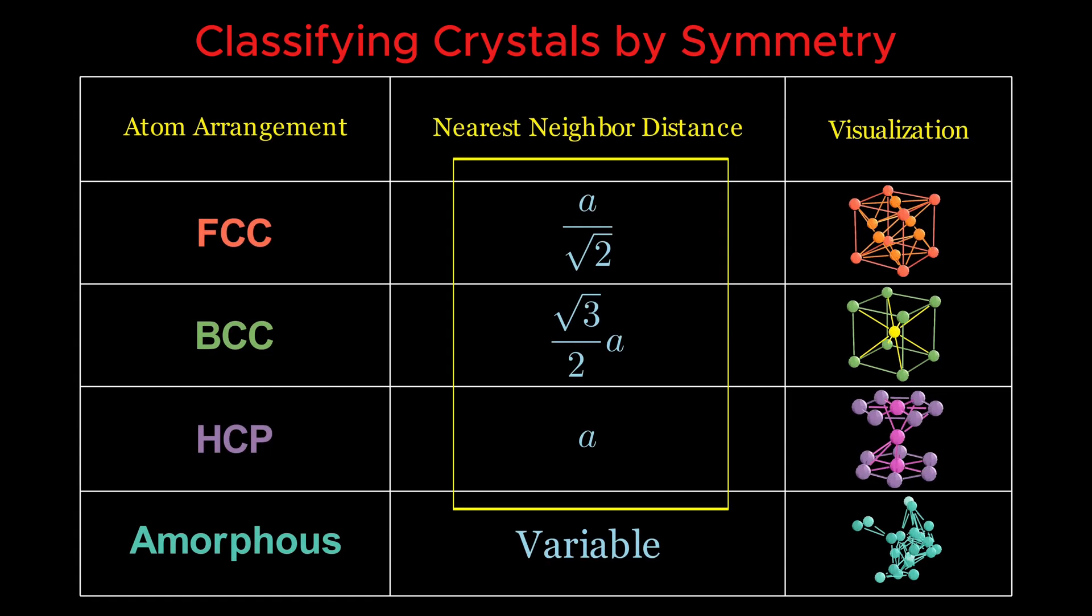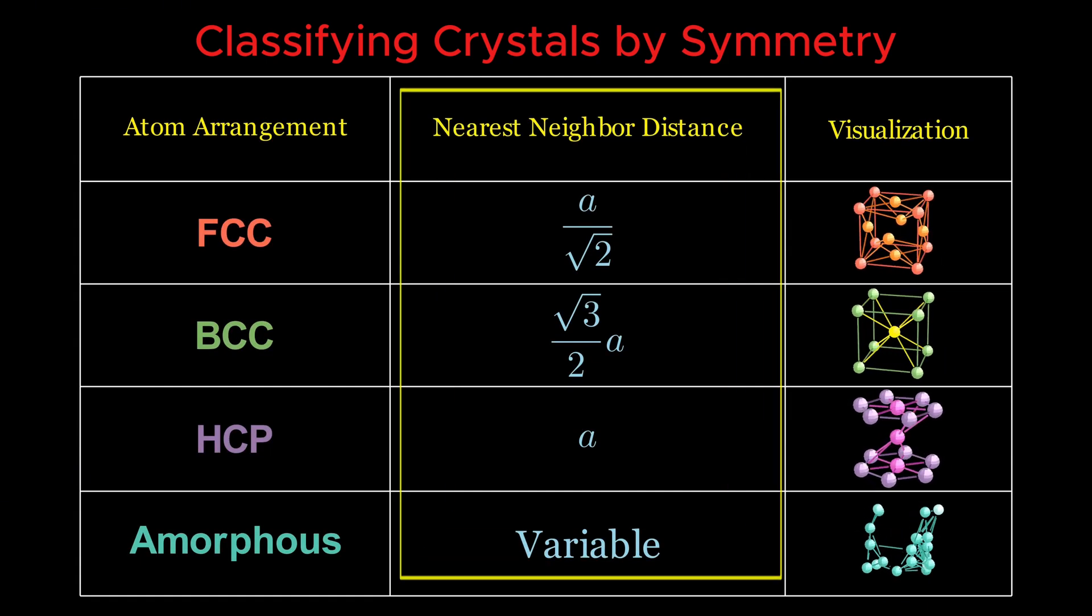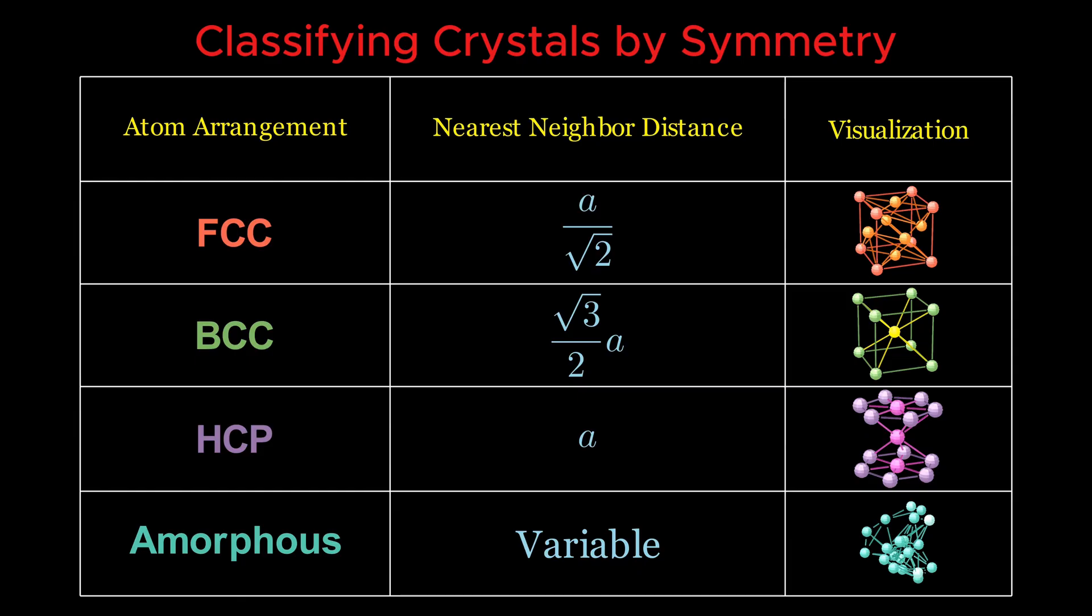At this point, you might think, well, the nearest neighbor distances differ between these crystals. Why not classify them based on that? It's tempting. But physicists do not classify crystals this way. They use something far more elegant: symmetry.